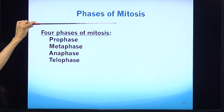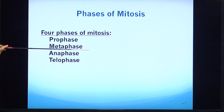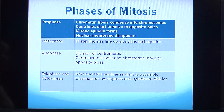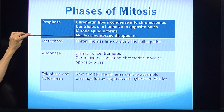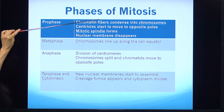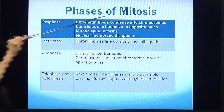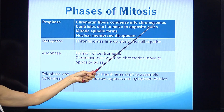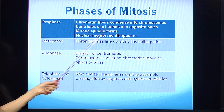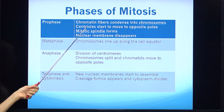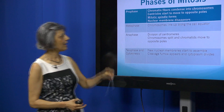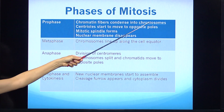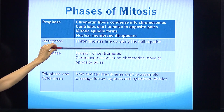These are the phases of mitosis: prophase, metaphase, anaphase, and telophase. In prophase, the chromatin is no longer in the shape of fibers — it starts to condense and we see actual chromosomes. The centrioles move to opposite poles and create the mitotic spindle. The nuclear membrane starts to disappear. In metaphase, the chromosomes that have formed now line up along the cell equator.